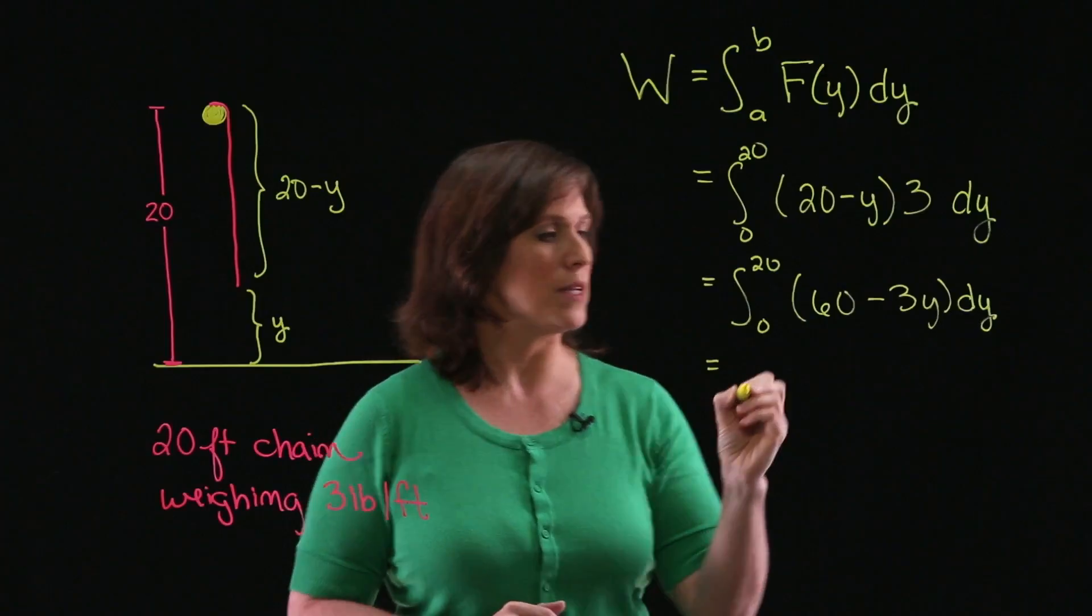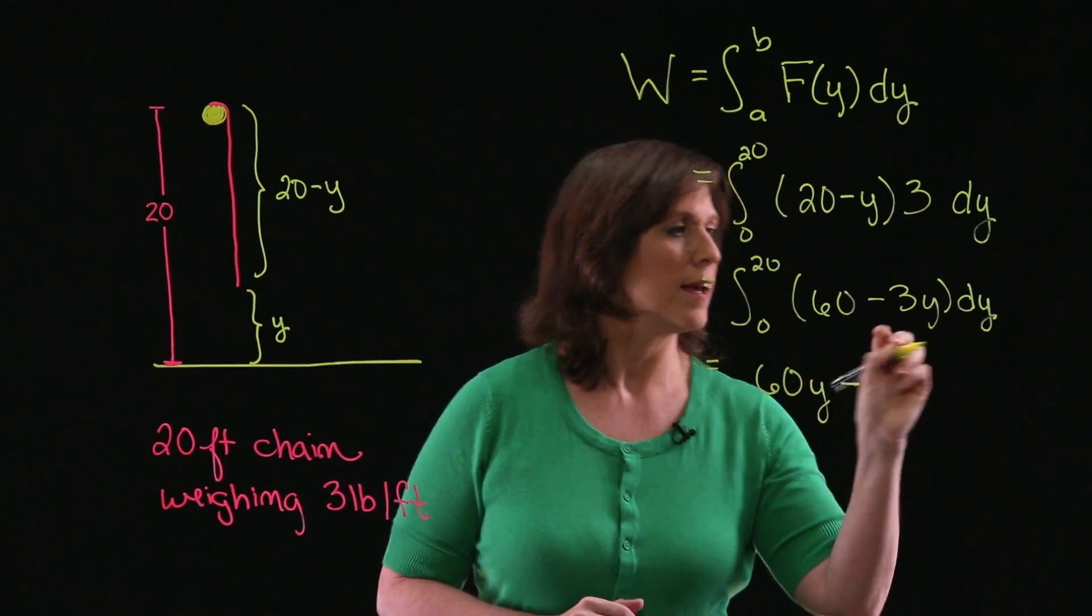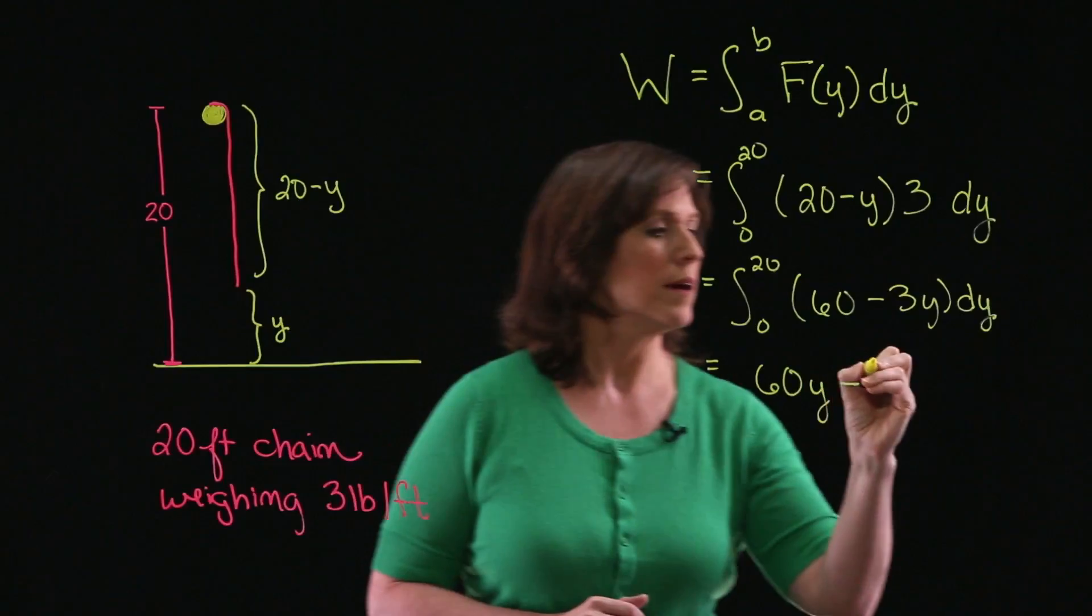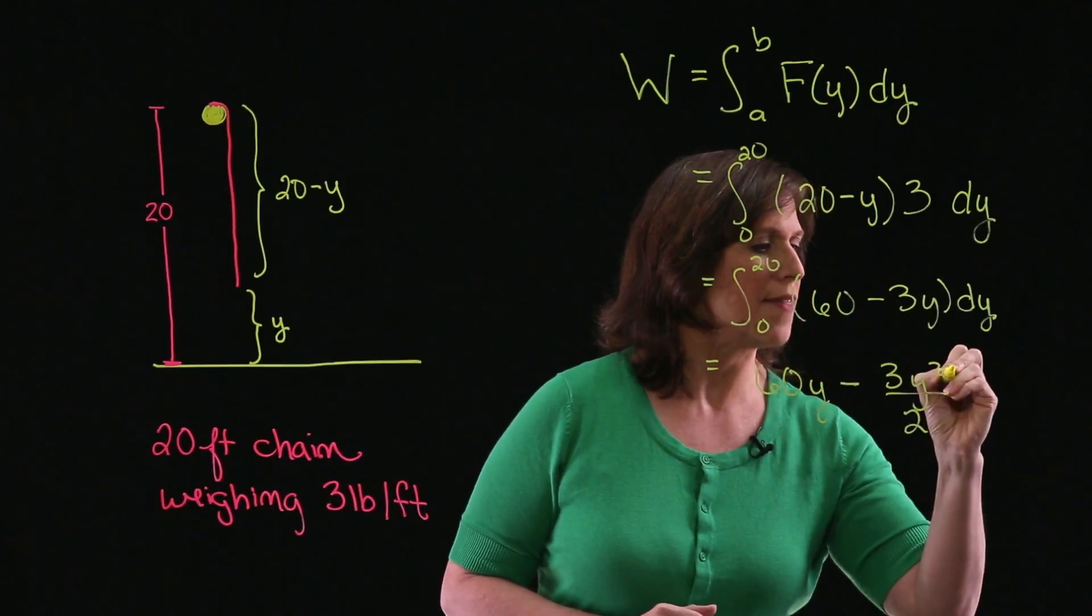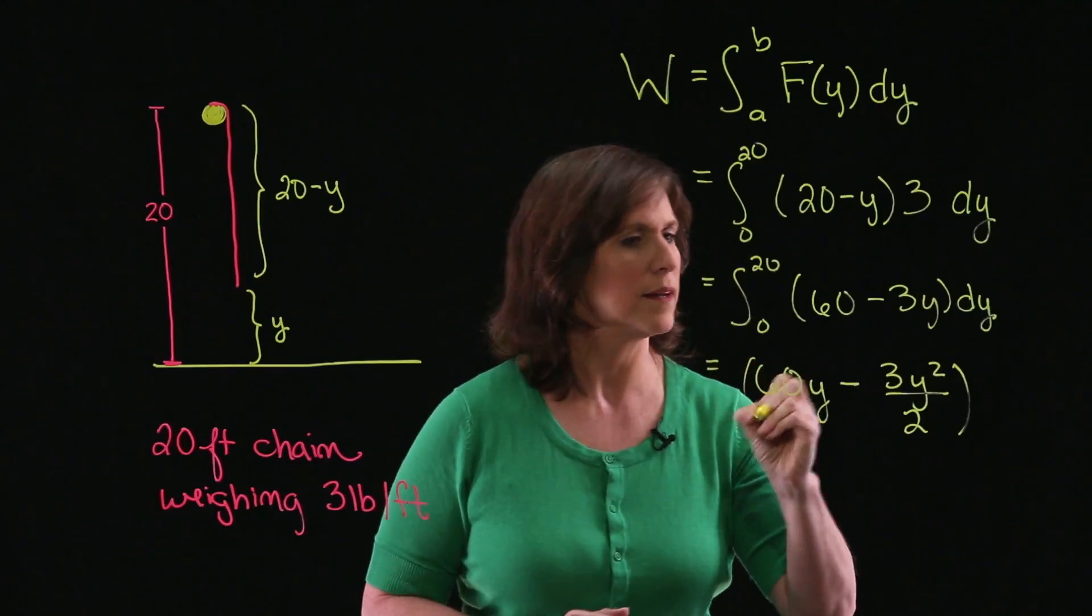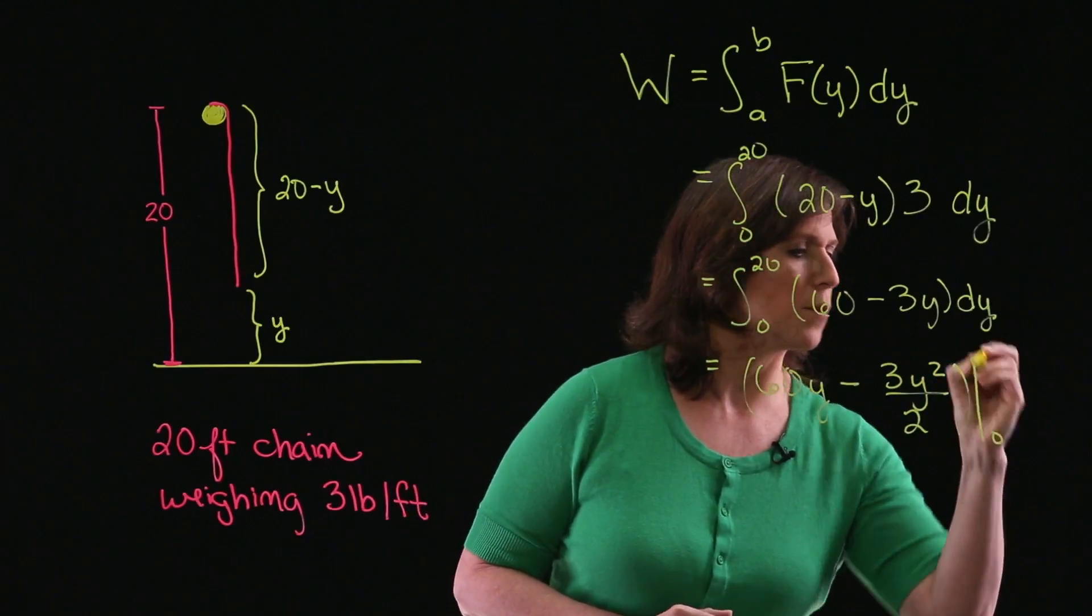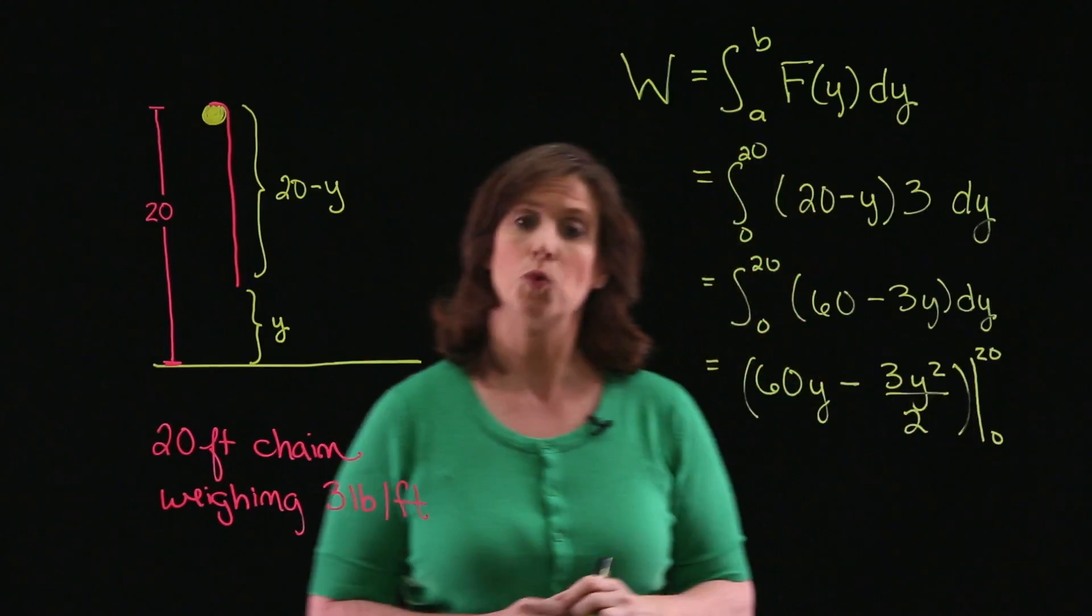The integral of 60 dy is 60y. The integral of 3y will be 3y squared divided by 2. And that will all be evaluated from 0 to 20.